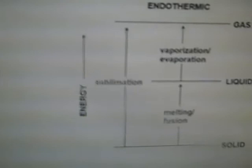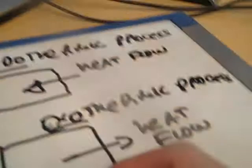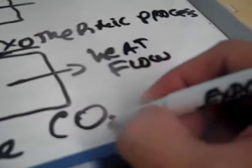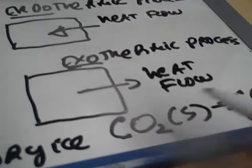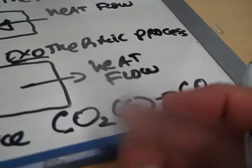One example of sublimation is dry ice. Dry ice is basically solid CO2 that goes directly into the gas phase. You can buy dry ice at Publix or Kroger, and many of you have probably seen a sublimation effect with dry ice.